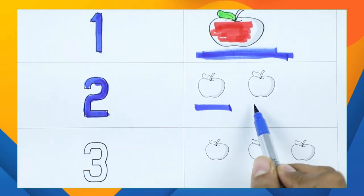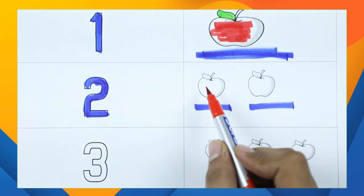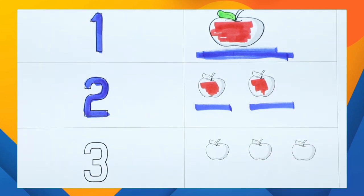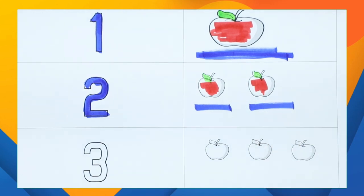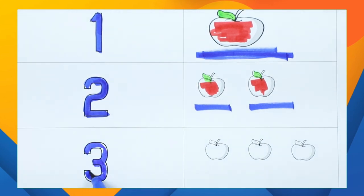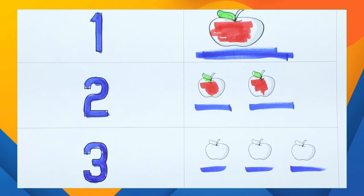One apple, two apples — it's two apples! Red color one apple, red color two apples. One leaf, two leaves. It's apple number three! So we want three apples here. One apple, two apples, three apples!